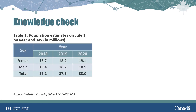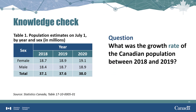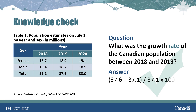Finally, let's calculate the growth rate in the Canadian population between 2018 and 2019. Calculate the difference in population between the two years, divide by the population in 2018, and multiply by 100 to express as a percentage. The result is a growth rate of 1.3%, meaning the Canadian population increased from 2018 to 2019.